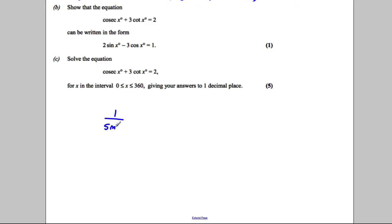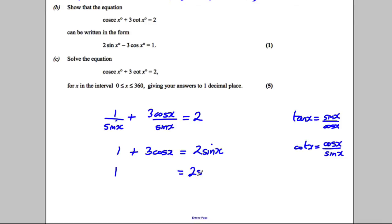So cosec x is 1 over sine x, so that's 1 over sine x plus 3 cot x. Remember that tan x is sine x divided by cosine x, so therefore cot x is going to be the reciprocal of this which is cosine x over sine x. So straight away 3 of this, so it's plus 3 cosine x divided by sine x, is equal to 2. Multiply everything by sine x so we have 1 add 3 cosine x is equal to 2 sine x.